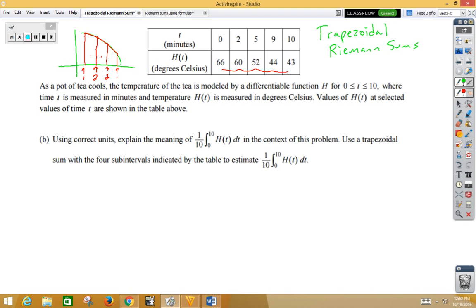Using correct units, explaining the meaning. Now this one tenth is talking about an average from 0 to 10. Let's look at the context of the question. This is the average amount of time that the pot of tea is cooling over the time frame of 0 to 10 in degrees Celsius.